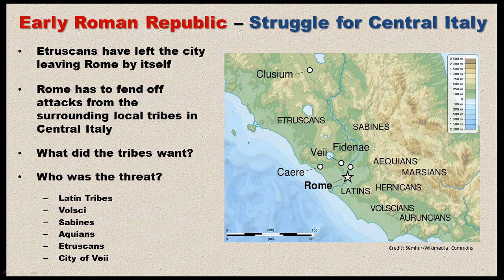The early Roman Republic was a struggle for Central Italy. At this time in Roman history, the Romans only controlled about 10 to 15 square miles, if you can imagine that. They hadn't really branched out to the rest of Italy yet, because they had to deal with all the local tribes that surrounded them.